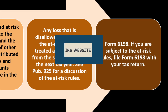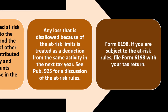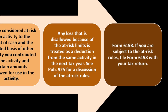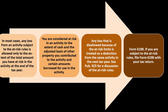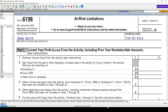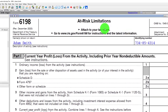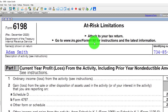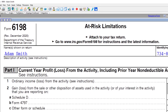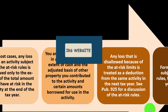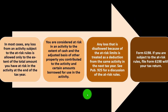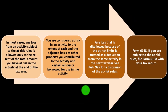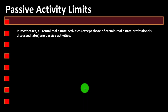You can see Publication 925 for a discussion of at-risk rules on the IRS website. If you are subject to the at-risk rules, file Form 6198 with your tax return. Here's a quick look at Form 6198 — At-Risk Limitations — where you can review the instructions and publication on the IRS website for more information.